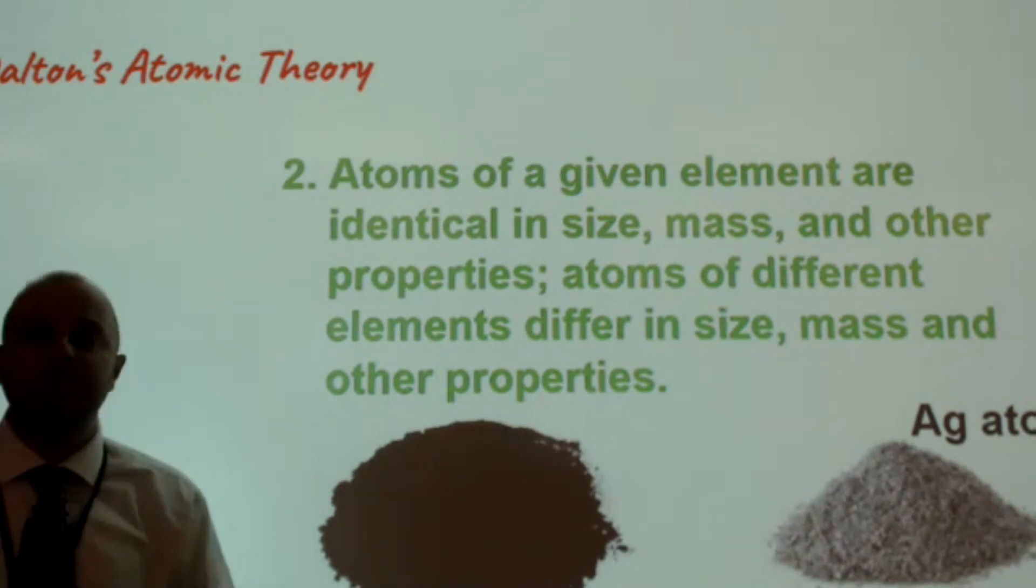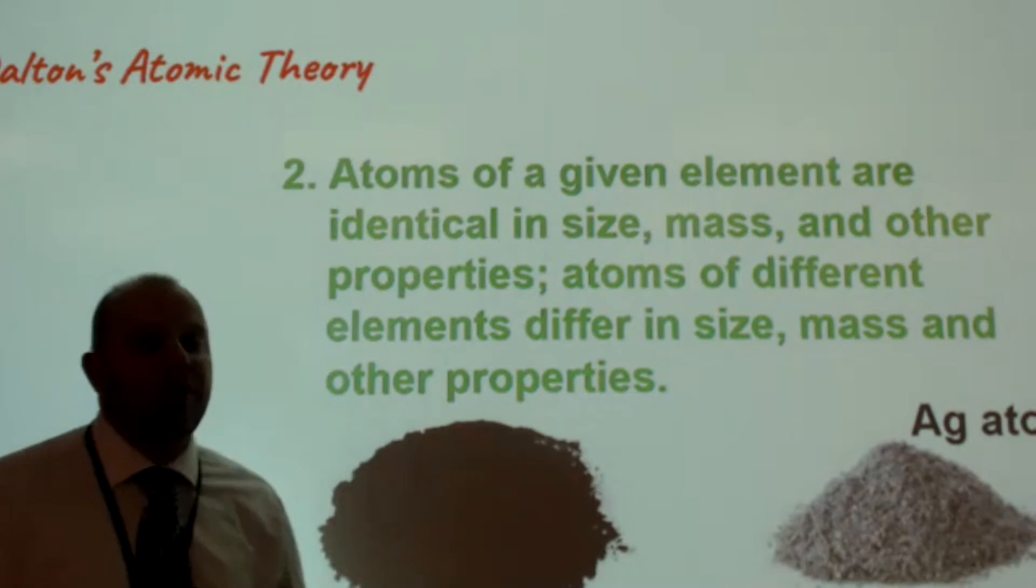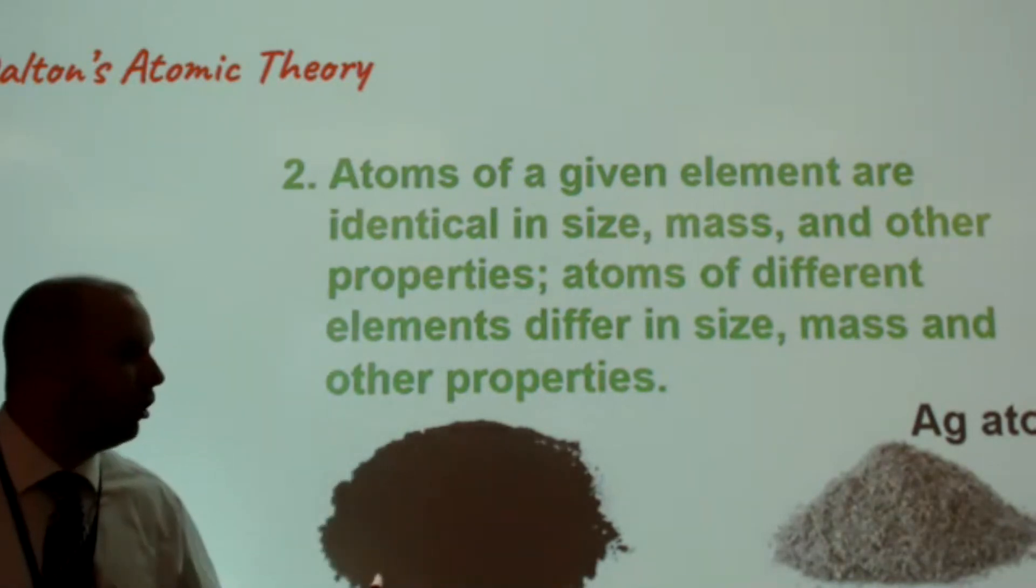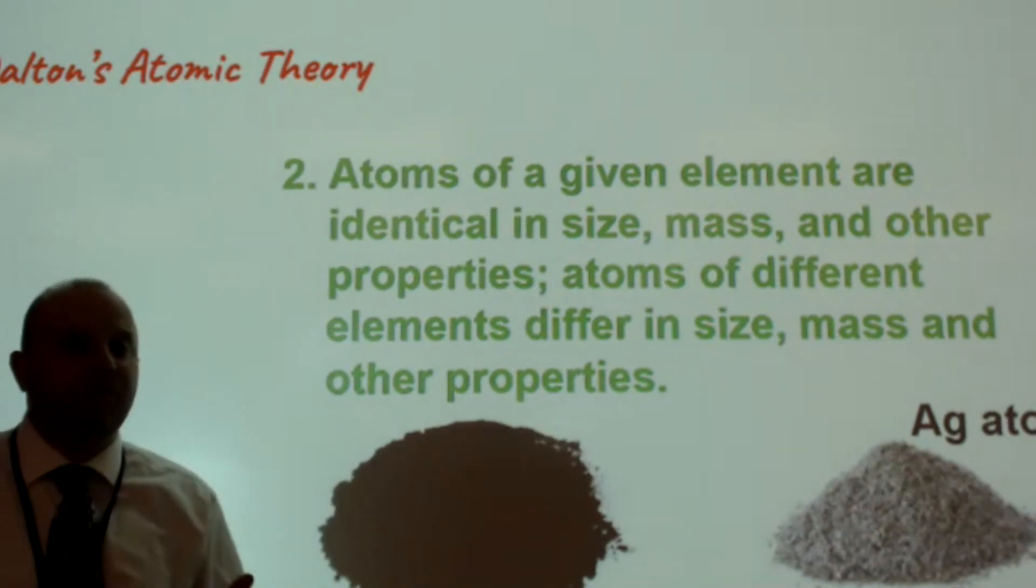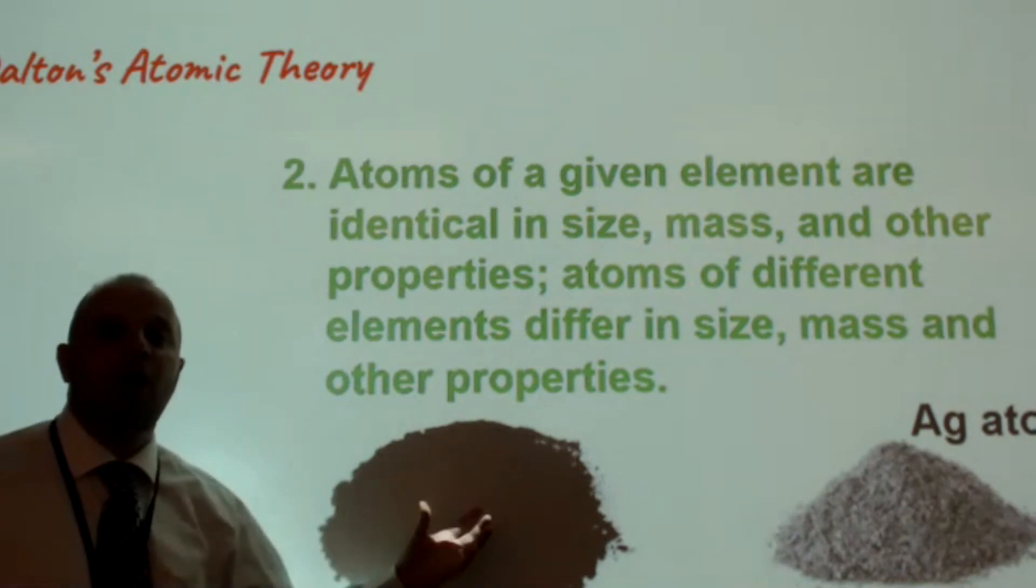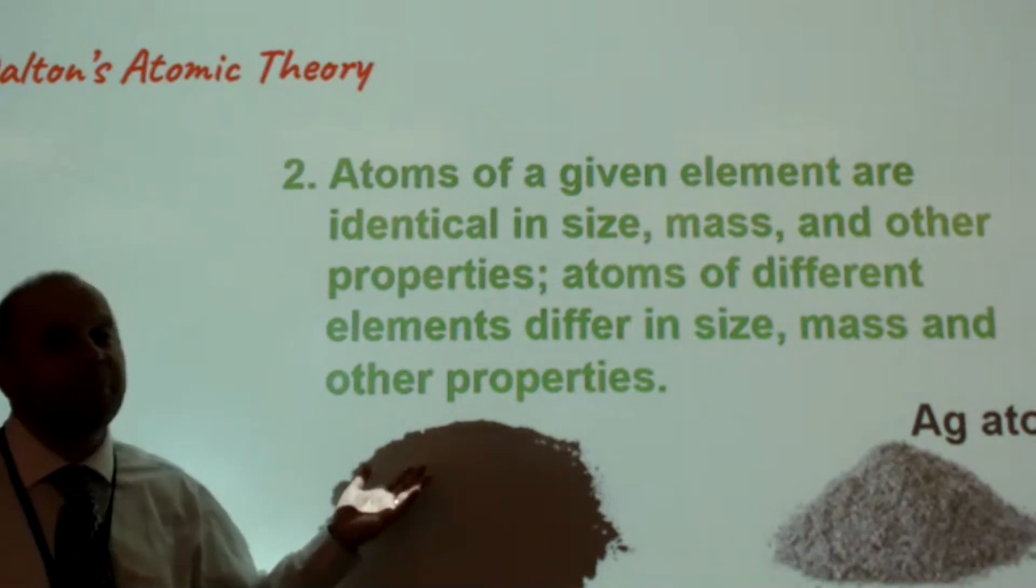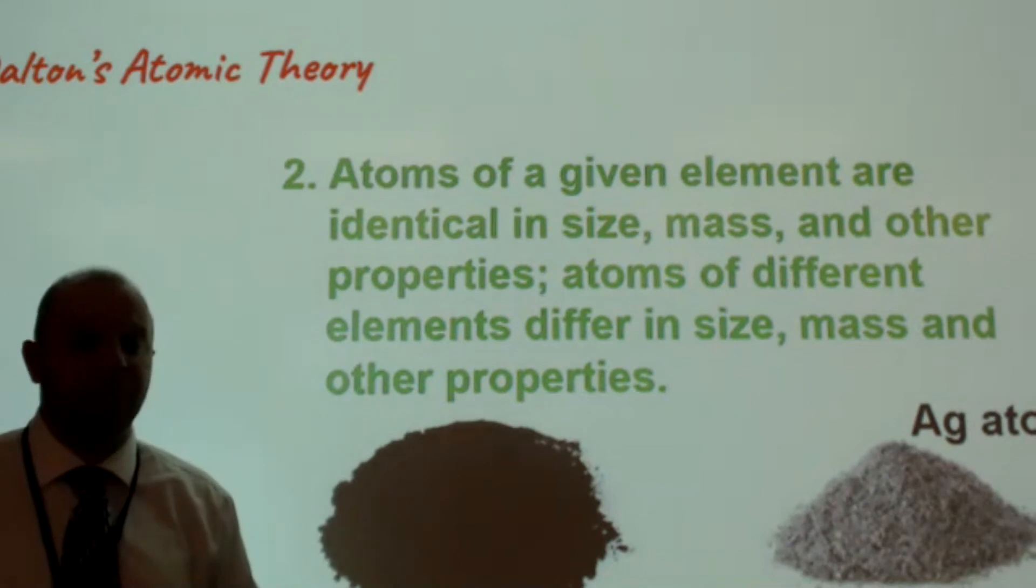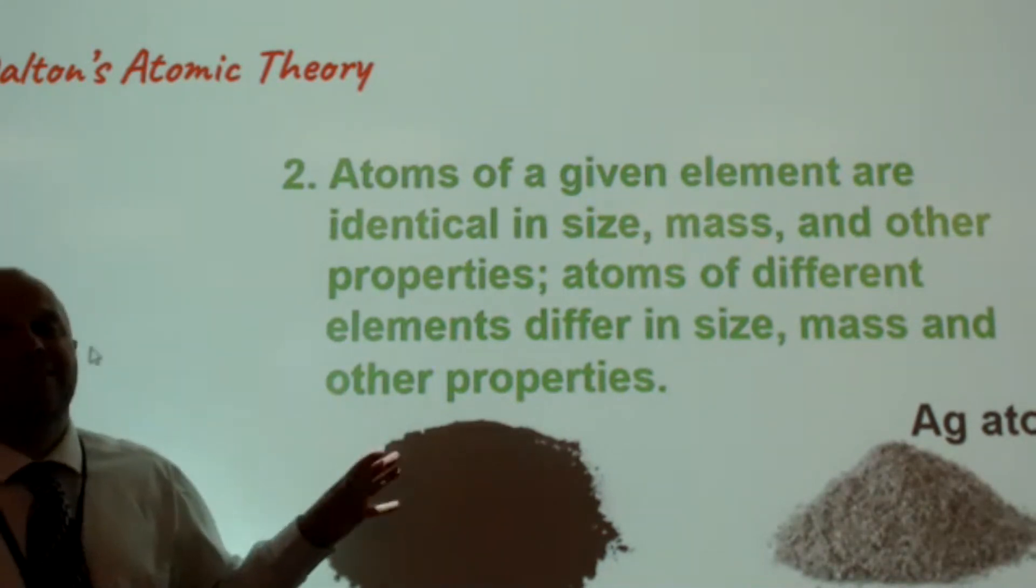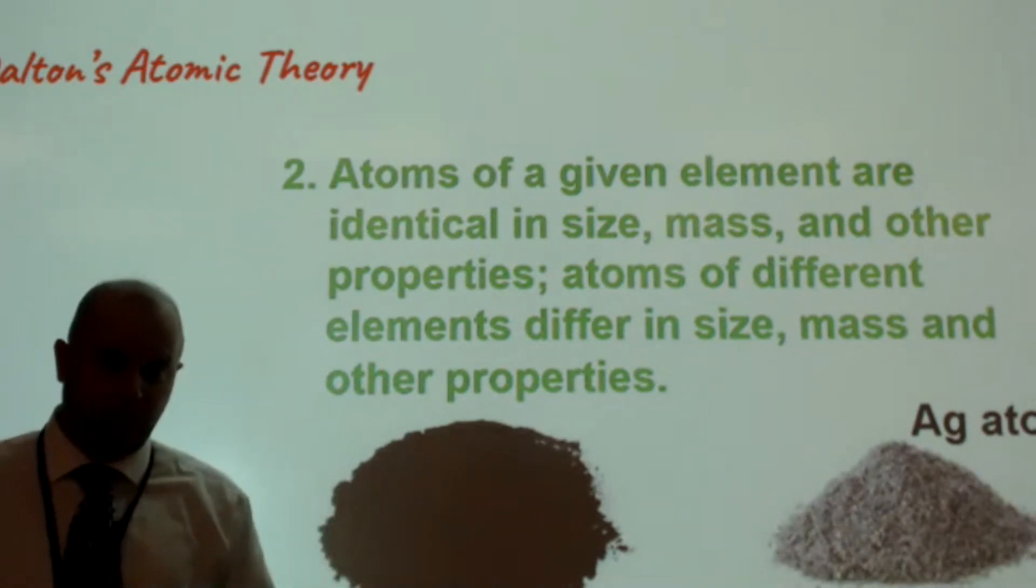Dalton's next postulate was that atoms of a given element are identical in size, mass, and other properties, and atoms of different elements differ in size, mass, and other properties. So if you were in the classroom, I could pass around samples of carbon or silver atoms, and you would see that even though they might look similar, obviously they're different in color, their texture would be different, their mass would be different from each other. So that part is the same. But within a single atom, all of those atoms essentially look the same. So all of the carbon atoms look the same as other carbon atoms, and all of the silver atoms look the same as other silver atoms. We're gonna come to find out that this didn't exactly hold true, or at least not all of it. But it's still pretty remarkable considering this was over 200 years ago.